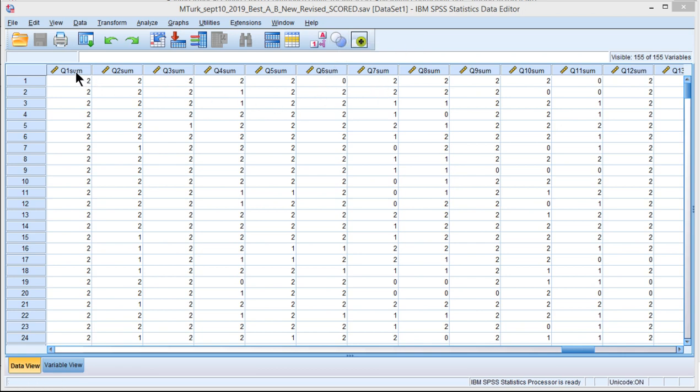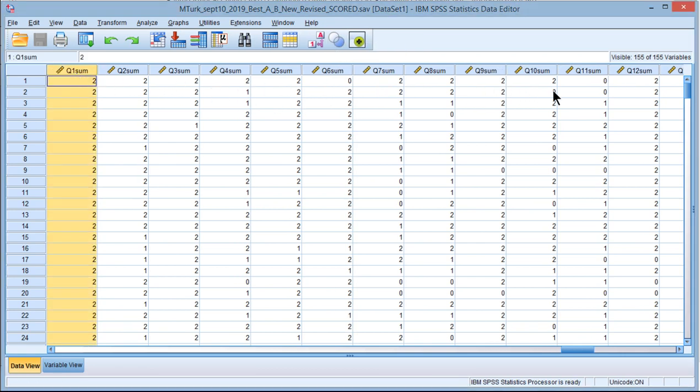So in this example, I've got several items that I want to create into a composite score, and I'm going to estimate the reliability for that.